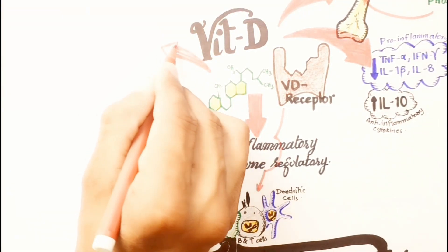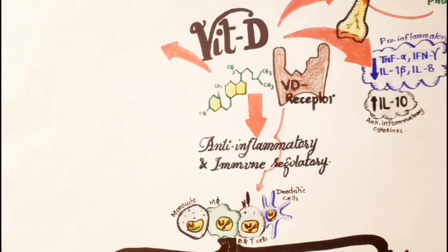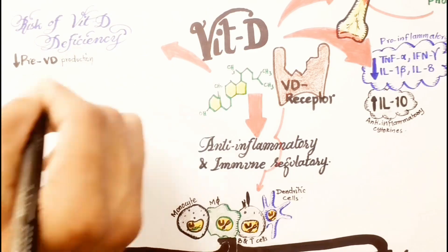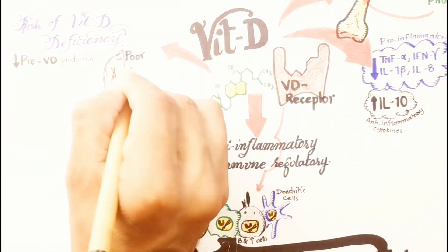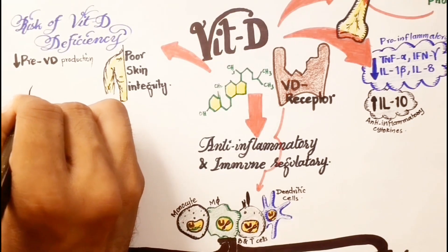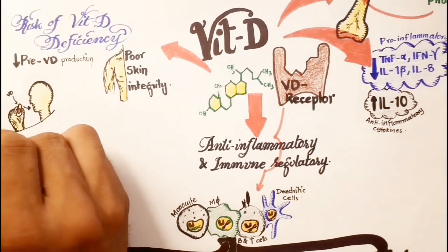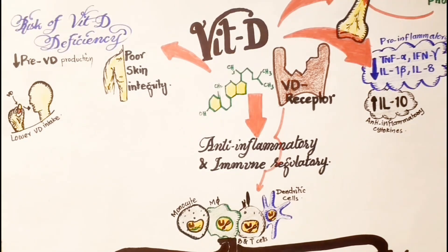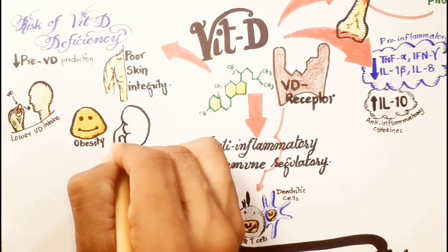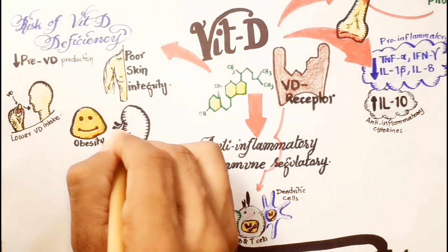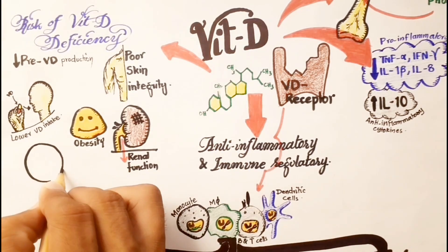Elderly adults are at risk for vitamin D deficiency due to several factors, including decreased free vitamin D production, poor skin integrity, decreased dietary intake of vitamin D, obesity, decreased renal function, as well as less time spent outdoors.